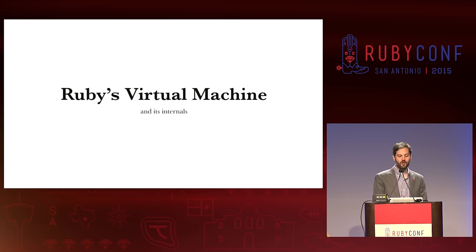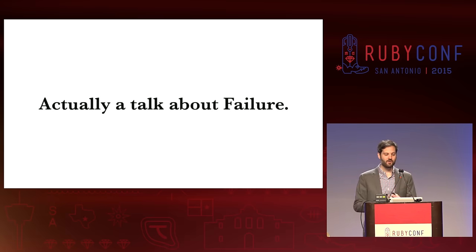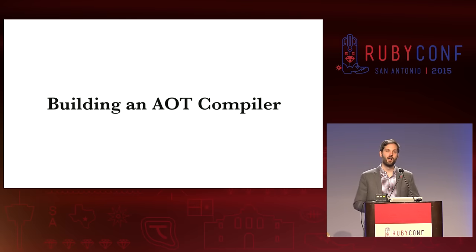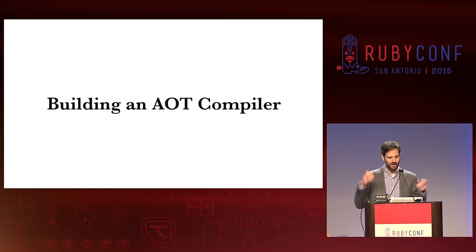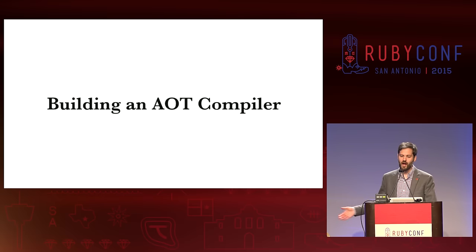We're going to talk about Ruby's virtual machine and its internals. Except that this talk is actually a talk about failure and how I failed. I decided that I would try to write an ahead of time compiler — I thought that would be really fun — and I failed at doing that. So this talk is going to be about what I learned on my way. I don't think it's actually a failure; I'm just not finished yet. I want to rebrand failure as 'potential for success.'